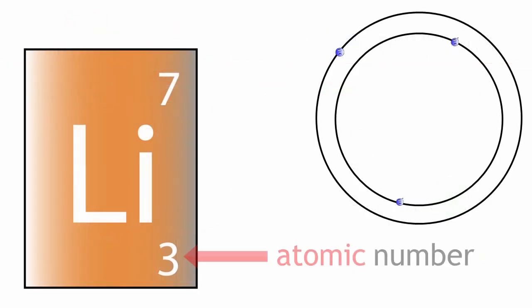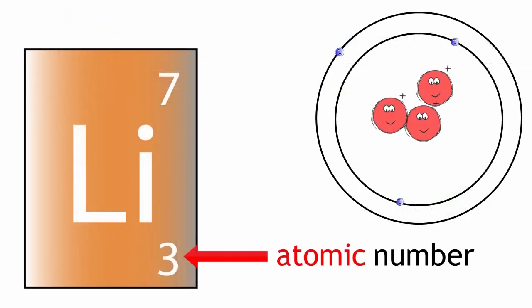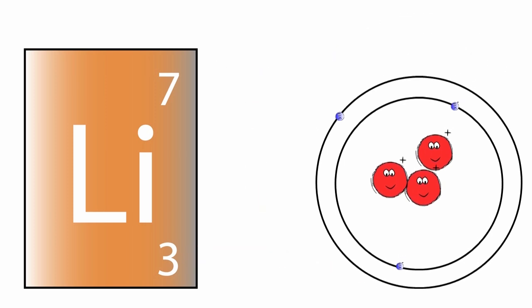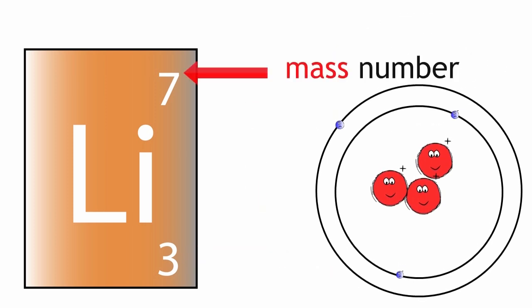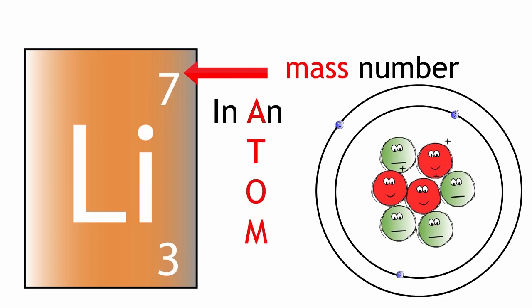So the atomic number is the number of protons in an atom, and the mass number is the number of protons and neutrons in an atom.